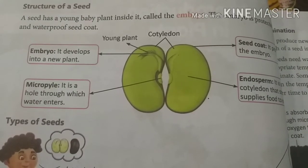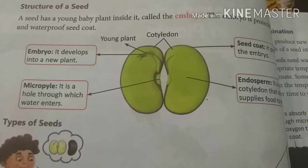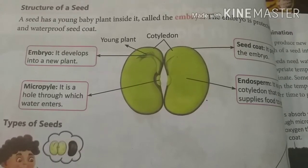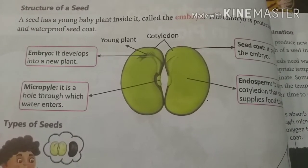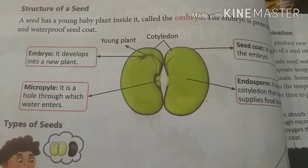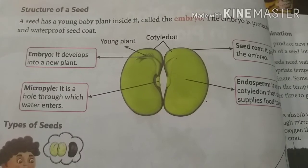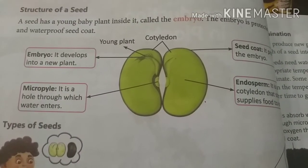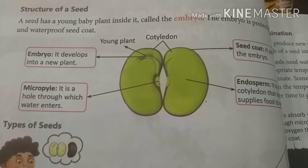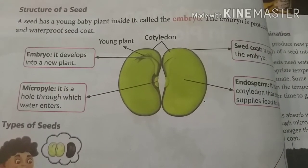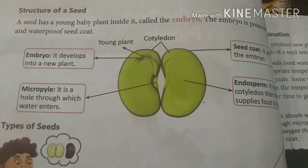This seed has two parts or two cotyledons. The micropyle is a small hole through which water enters the seed. The embryo develops into a new plant, or young plant. The seed coat protects the seed, and the endosperm provides food to the young plant.